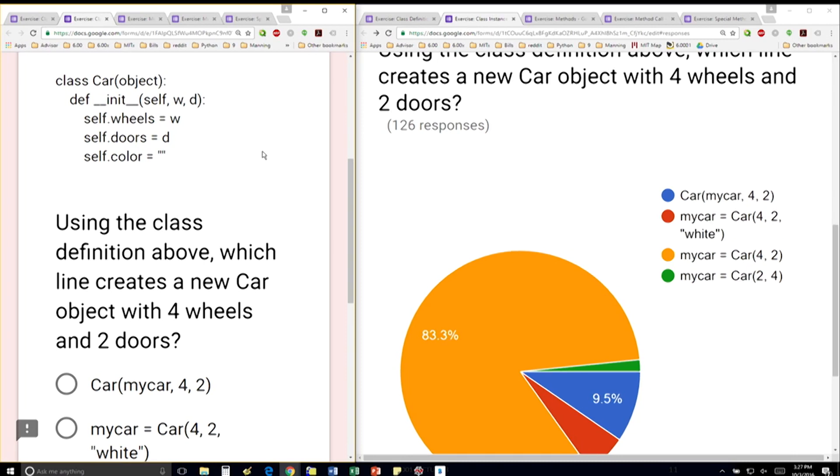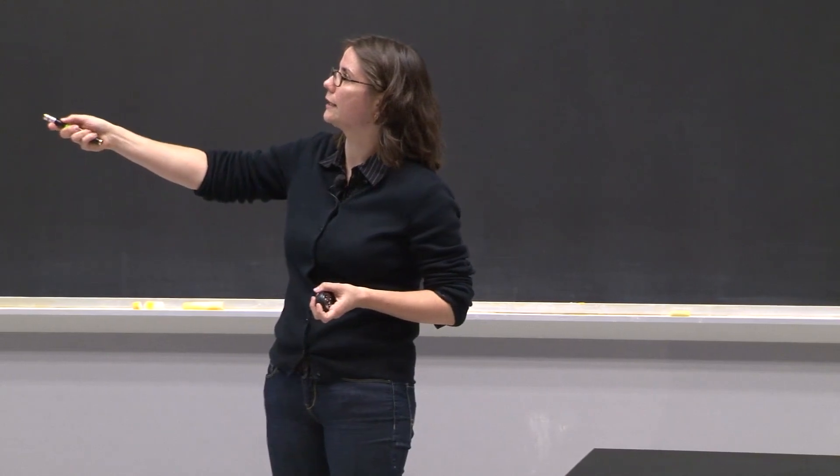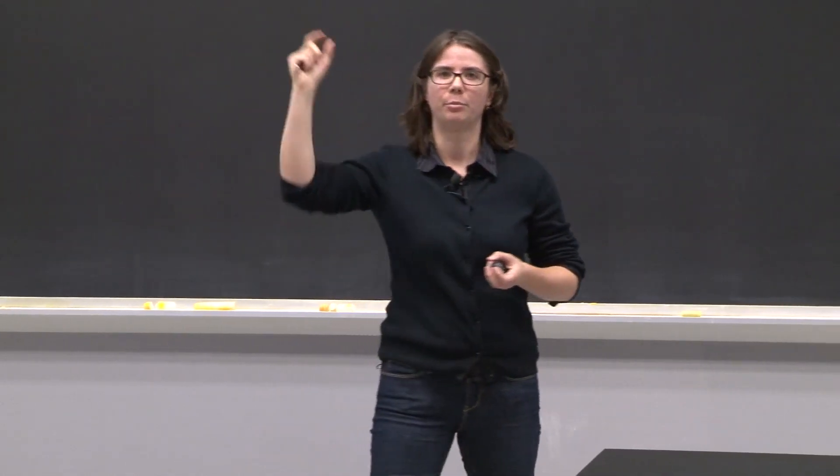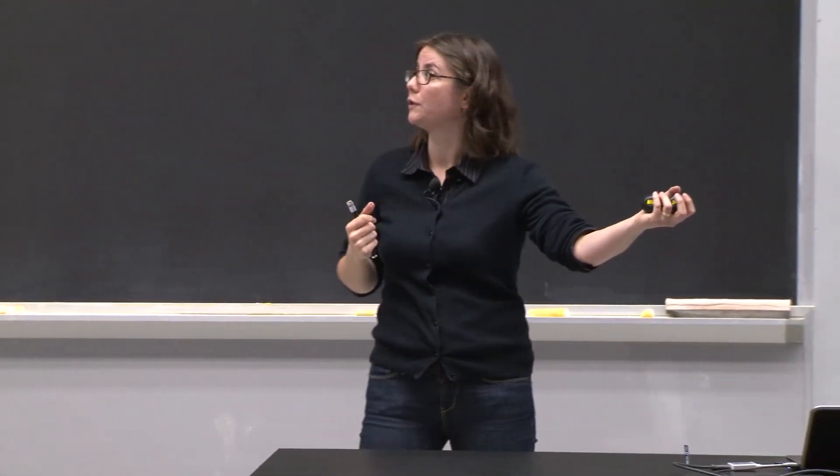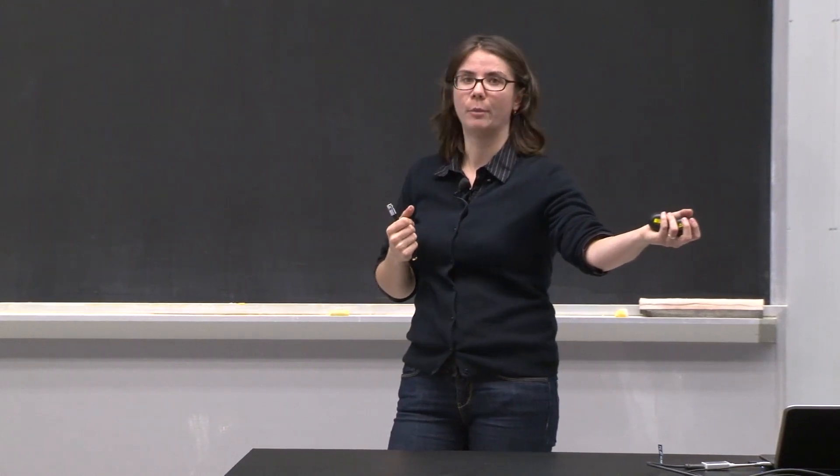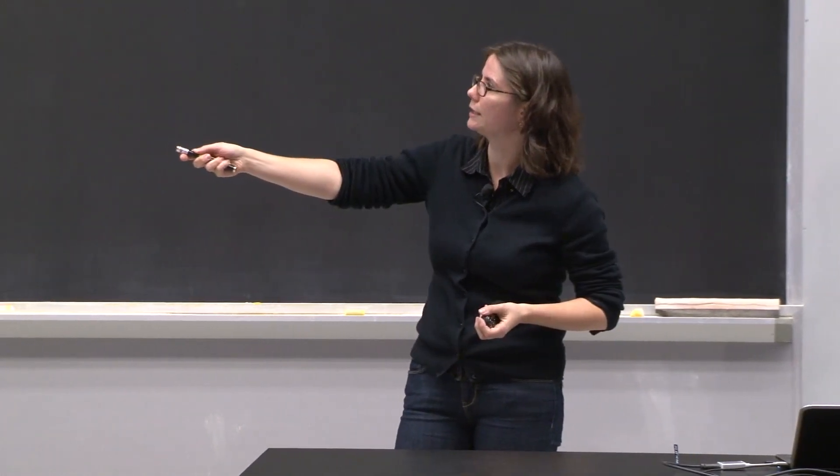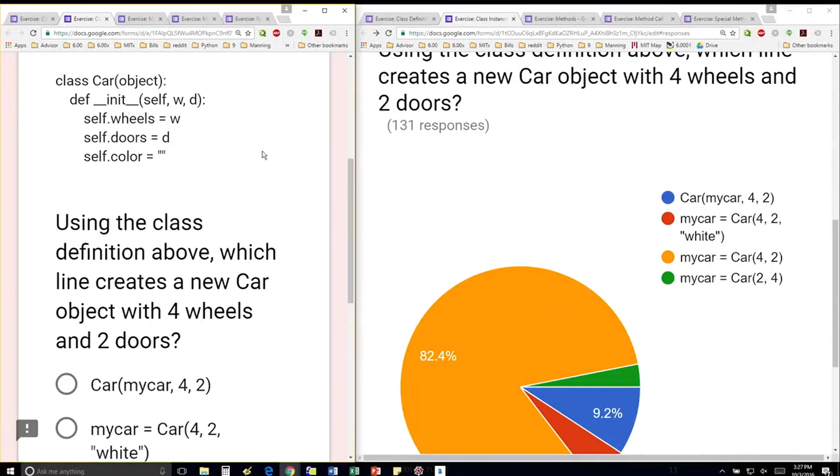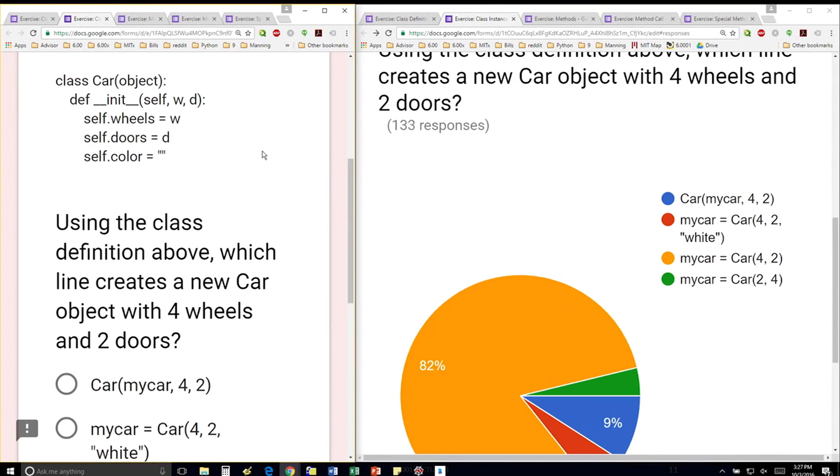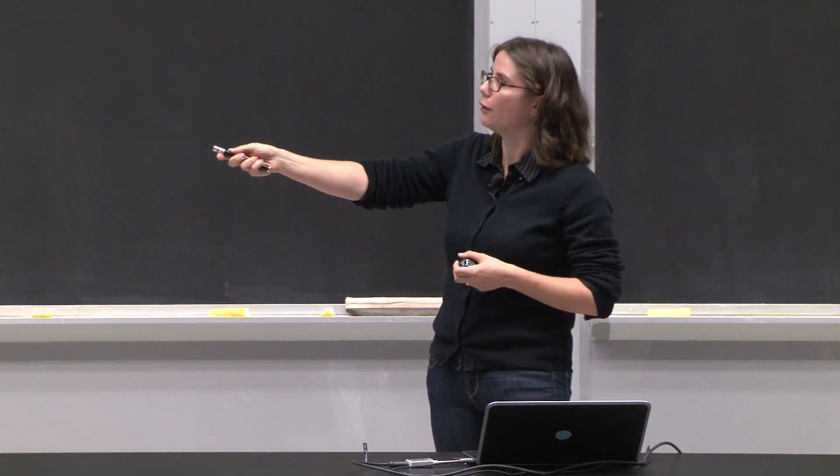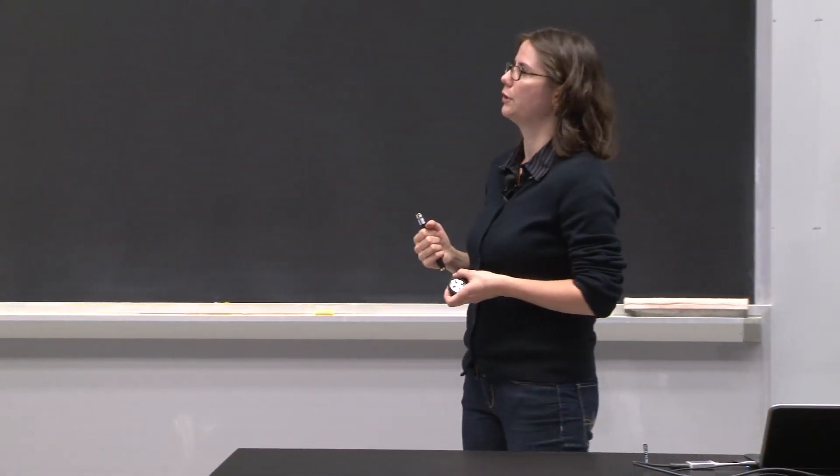Also notice that inside the init, I can do any other sort of initializations that I'd like. It's not just assigning variables from the parameters to variables for my objects. In this case, I'm creating a new data attribute named color, and I'm going to create it to be an empty string, even though I didn't pass in any color to my object.